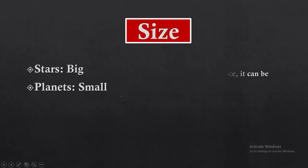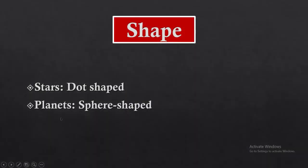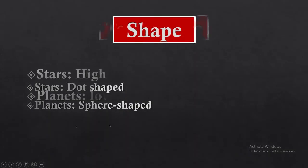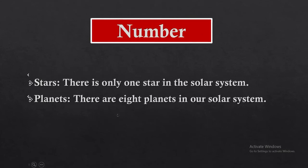The next difference is size: the size of stars is big and the size of planets is small. Regarding shape: stars are dot-shaped and planets are sphere-shaped. Regarding temperature: the temperature of stars is high and the temperature of planets is low.